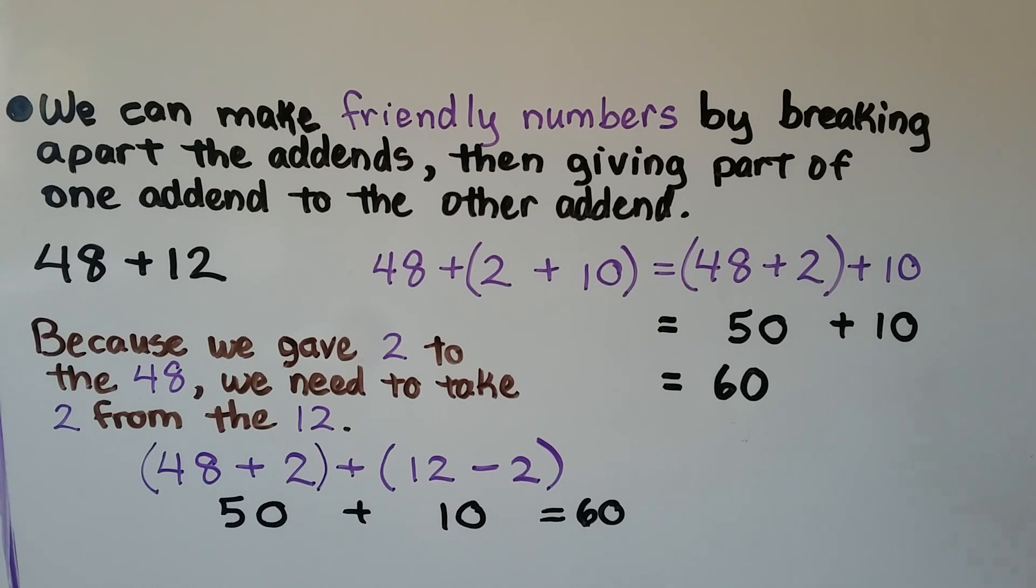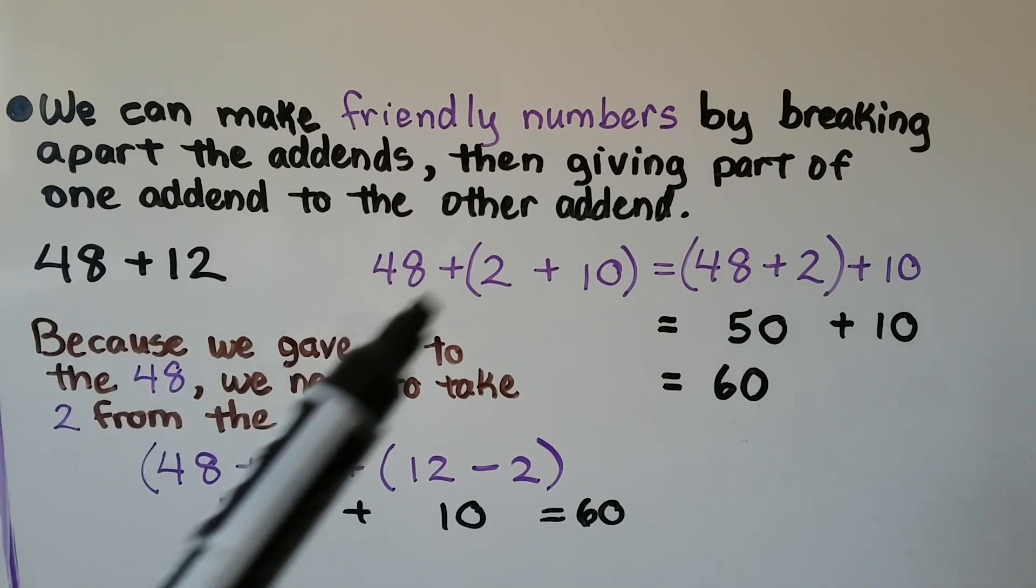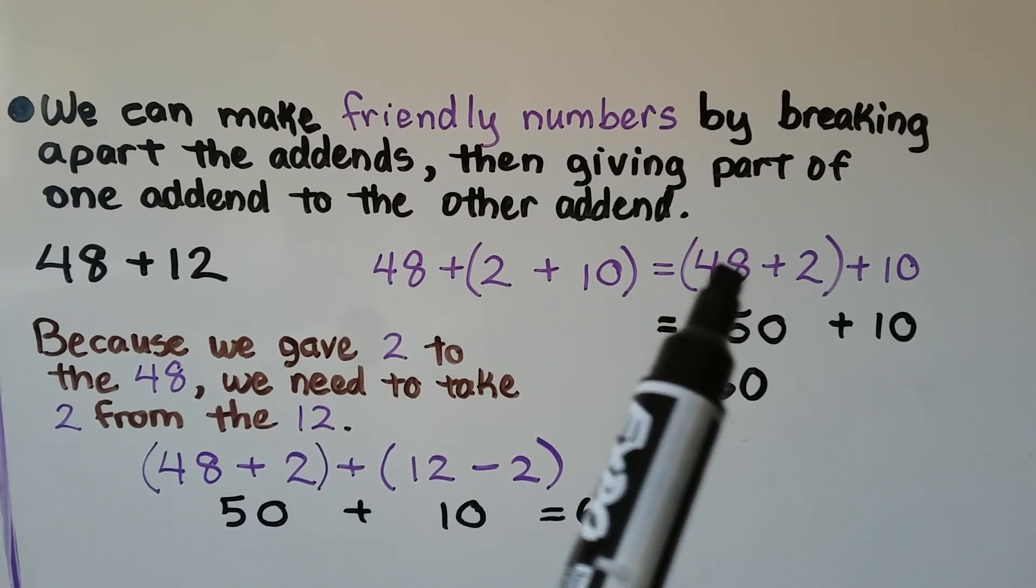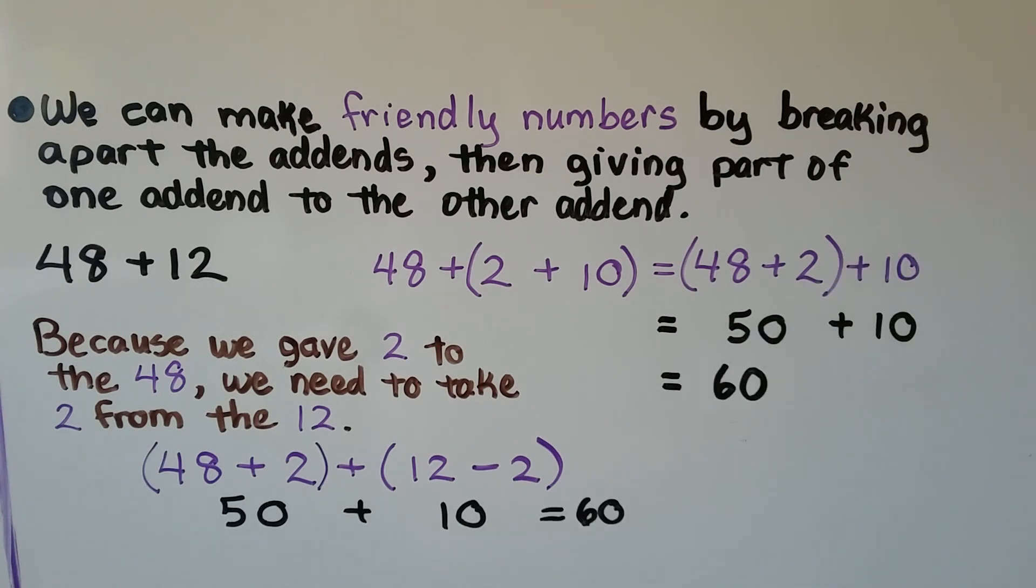We can make friendly numbers by breaking apart the addends, then giving part of one addend to the other addend. If we need to add 48 plus 12, we can break the 12 apart into a 2 plus a 10. We can give that 2 to the 48, and then add the 10. Then we would have 50 plus 10. That's a lot easier to add in your head. That would be 60.